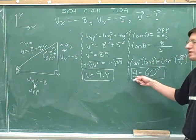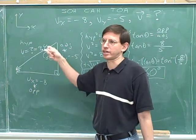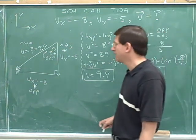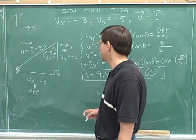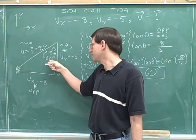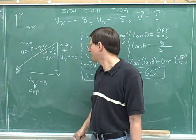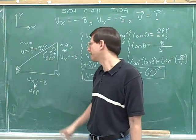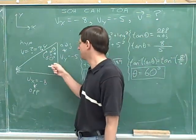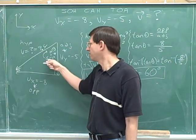In order for your reader to interpret this direction, you have to either draw the picture and label theta, or describe in words where the angle is. You would say that V is making an angle of 60 degrees to the left of the negative Y axis. So V has a magnitude of 9.4 and a direction 60 degrees to the left of the negative Y axis. Or you can draw the picture and label the length as 9.4 and the angle as 60.